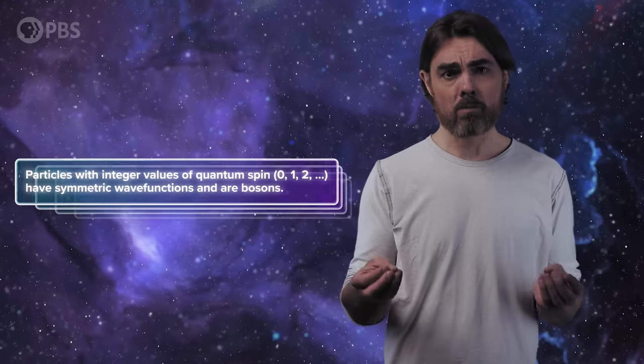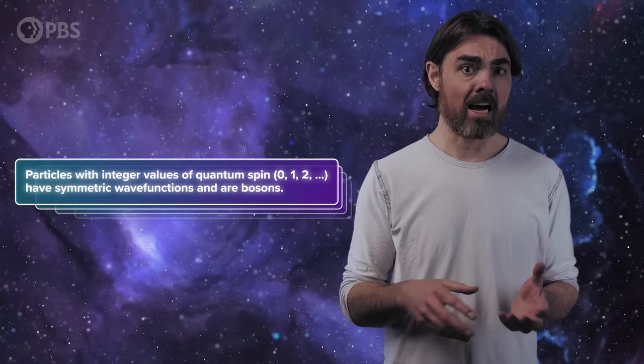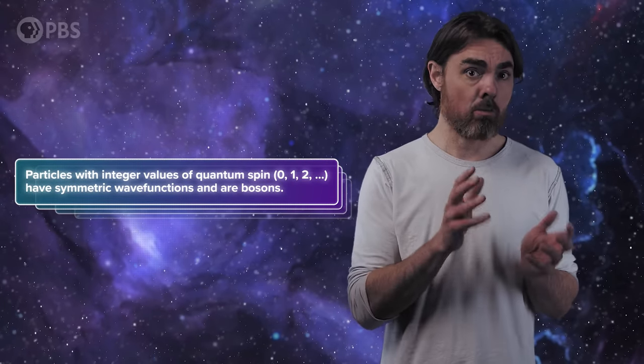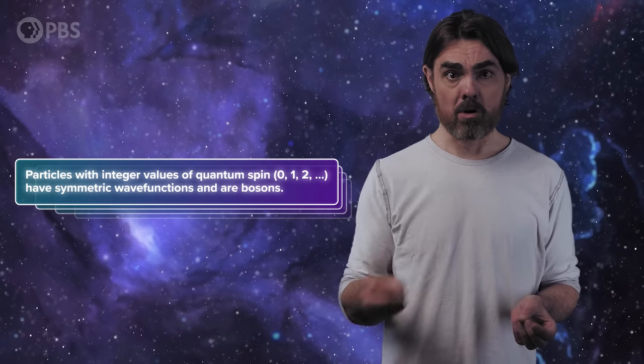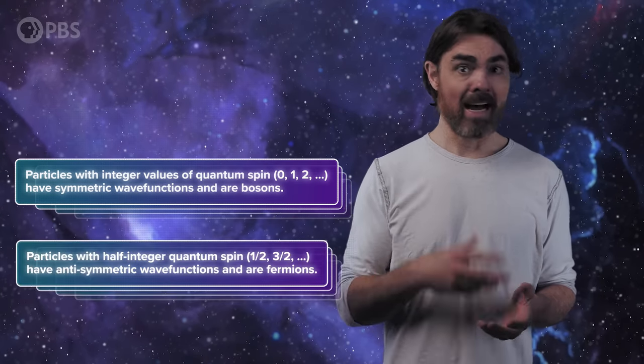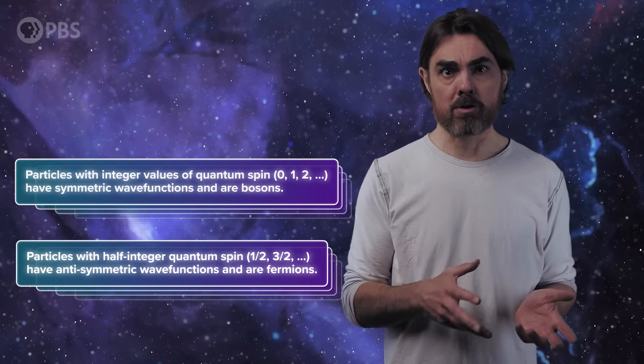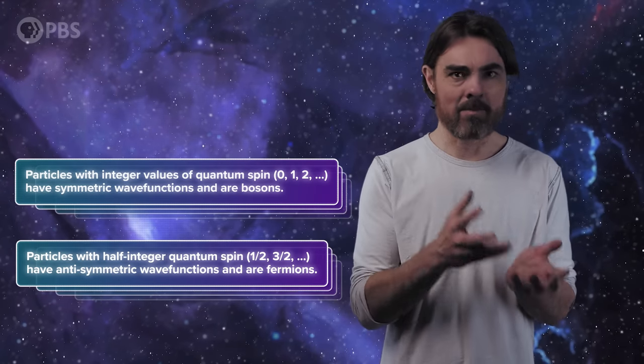All particles with values of quantum spin that are an integer, so 0, 1, 2, etc., are symmetric and are bosons. However, those with half-integer spin, 1/2, 3/2, etc., are anti-symmetric fermions.